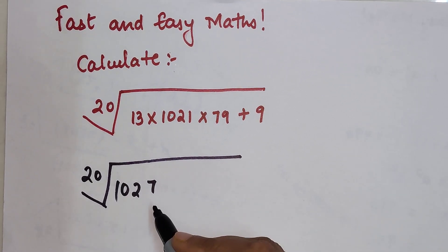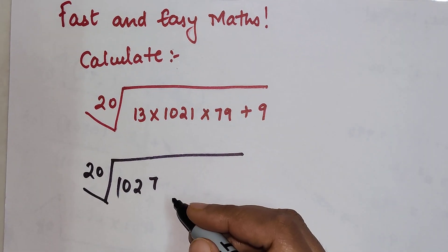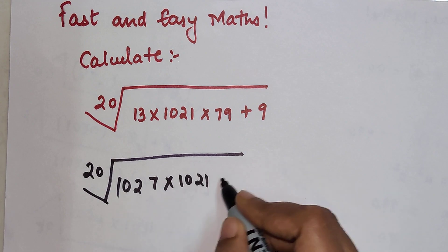If you want to know how I did this orally, then the link will be available on top and at the end of this video. So now this will be written as 1027 × 1021 + 9.